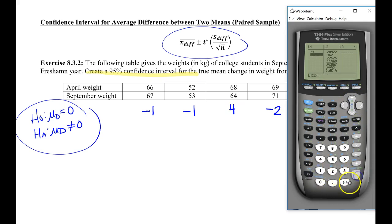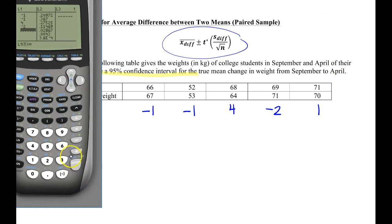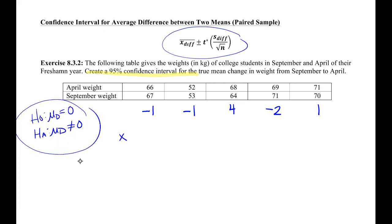So we have a negative 1, a negative 1, a 4, a negative 2, and a positive 1. And if we wanted to, we could do our 1 var stats on this. We find that our X bar is equal to 0.2. So the average amount that people gain is 0.2 pounds, not a whole lot at all.